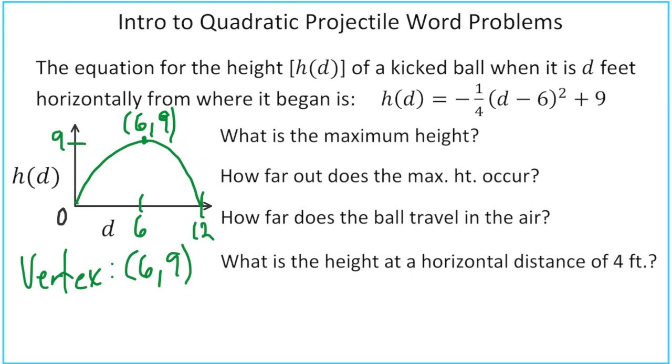So what is our maximum height? Our maximum height is 9 feet occurring at the vertex. How far out does the maximum height occur? Again, this is our vertex, that's our value of 6.